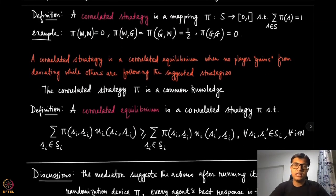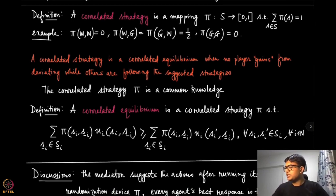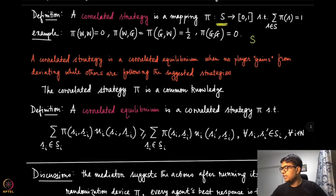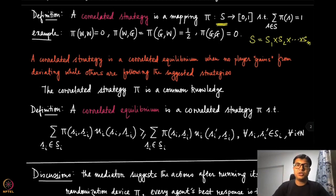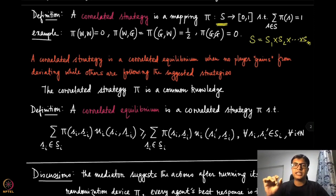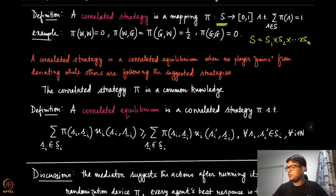A correlated strategy is essentially a mapping pi from the set of strategy profiles S — which is the Cartesian product S1 × S2 × ... × Sn — assigning probability masses over the entire strategy profile, such that pi is always between 0 and 1 and the sum over all strategy profiles equals 1.